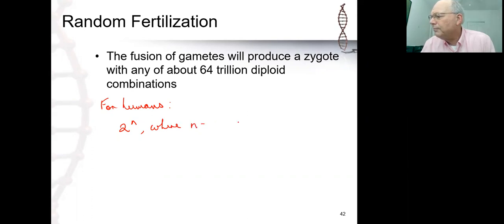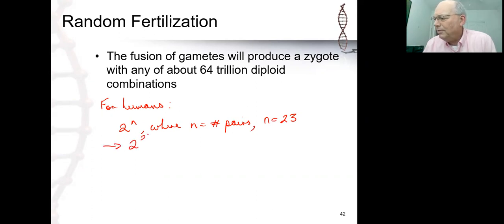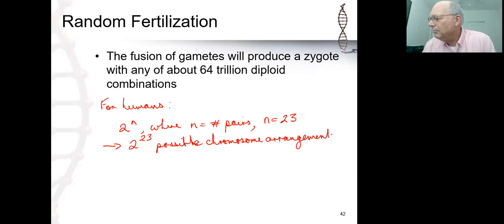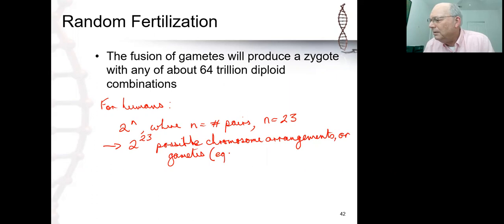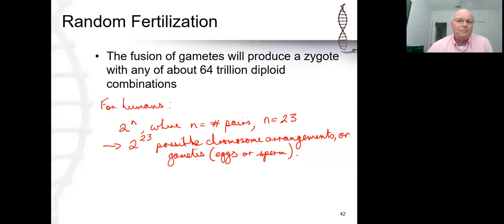For humans, n equals 23. So that gives us 2 to the power 23 possible chromosome arrangements — and those are really possible gametes, so it's 2 to the power 23 possible eggs or sperm. We are all capable of producing that number of different types of eggs or sperm.